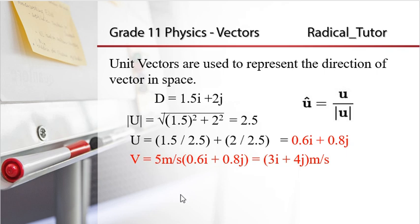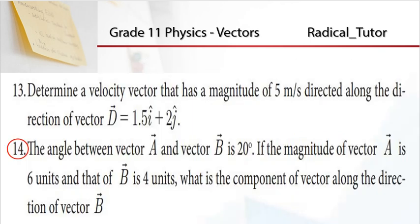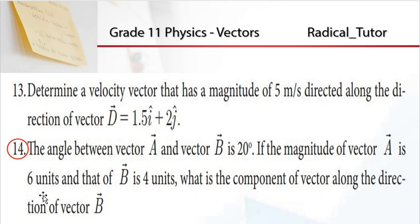This is question number 14. The angle between vector A and vector B is 20 degrees. If the magnitude of vector A is 6 units and that of vector B is 4 units, what is the component of vector A along the direction of vector B?